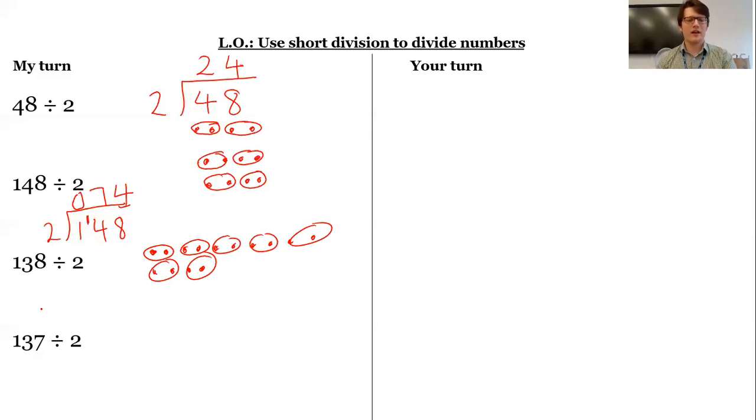What about 138 divided by two then? Well, let's have a look at this. I'm going to space a little bit. So again, we've seen, well, one, I can't make a group of two yet. So no groups of two. I'm going to put that one over here. So now I'm going to look at 13.